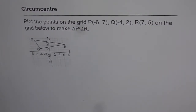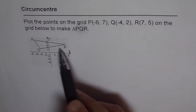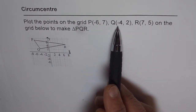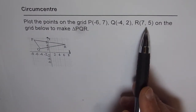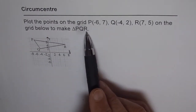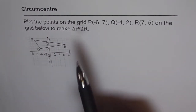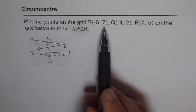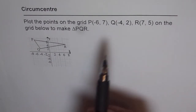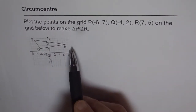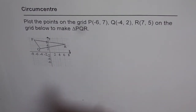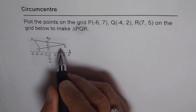Let's try to understand how to find the circumcenter of a triangle. Here we have a triangle PQR. Plot the points on the grid: P is (-6, 7), Q is (-4, 2), R is (7, 5). The triangle is already plotted for you. Now you need to find the circumcenter of this triangle.